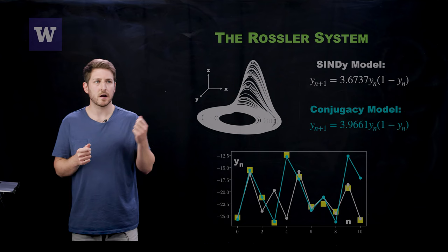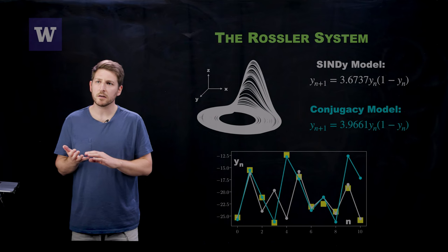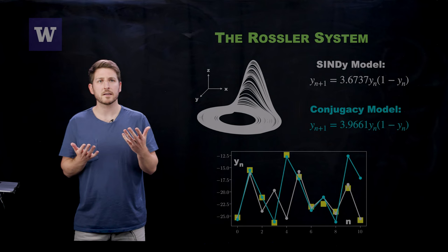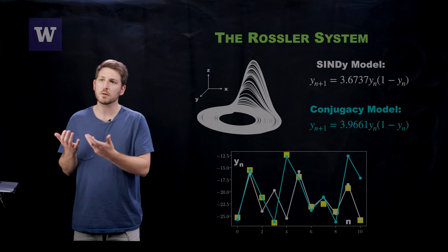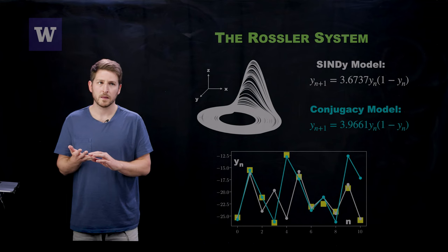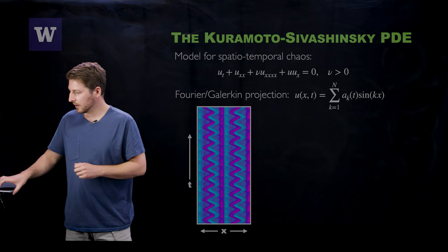Whereas the conjugacy model remains accurate for seven or even eight iterations of this Poincaré section. Now we emphasize that this is almost as good as you're going to be able to get because the system is chaotic and therefore it's extremely sensitive to both initial conditions and the parameters that are being tuned here. But this is a significant improvement over the SINDy model.